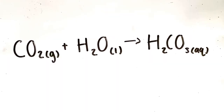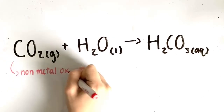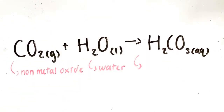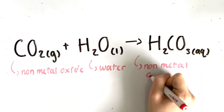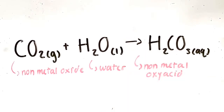Secondly, a nonmetal oxide plus water yields a nonmetal oxy acid. For example, carbon dioxide plus water yields carbonic acid. Carbon dioxide is our nonmetal oxide, H₂O is the water, and carbonic acid is the nonmetal oxy acid.